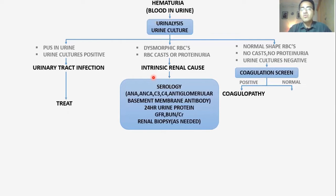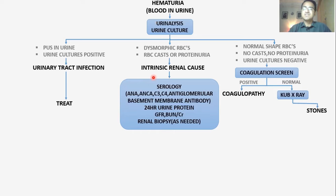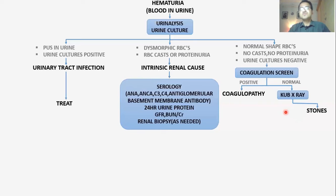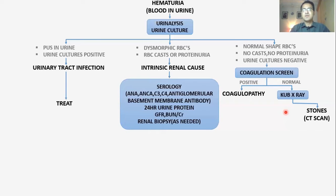Then you have to go for a KUB x-ray, which visualizes the kidneys, ureter, and bladder. On KUB x-ray you can find stones as a cause of hematuria. This picture shows a KUB x-ray with a stone present in the kidney. If you find stones, you have to treat them. One important note: the gold standard investigation for stones is not the KUB x-ray — it is CT scan.